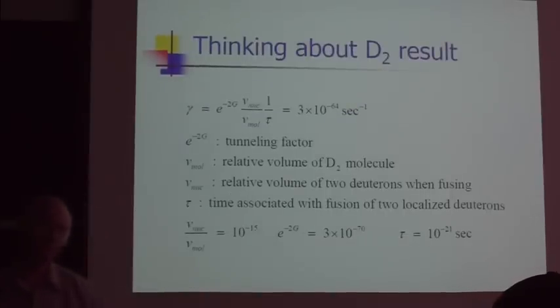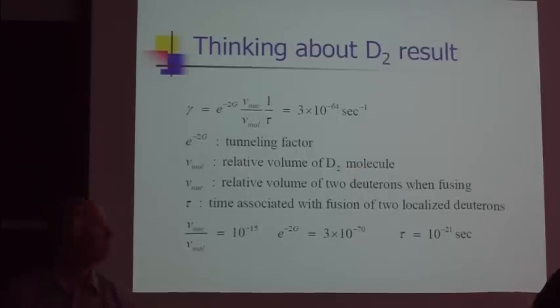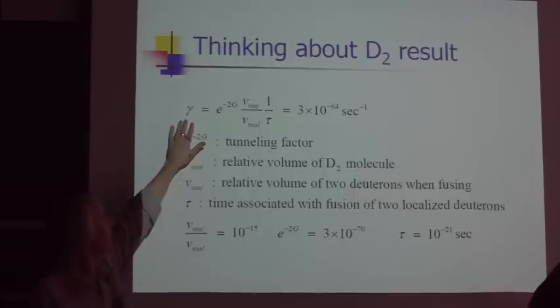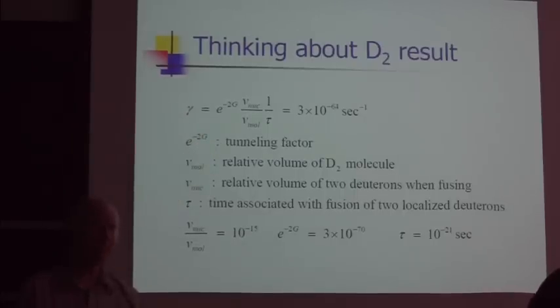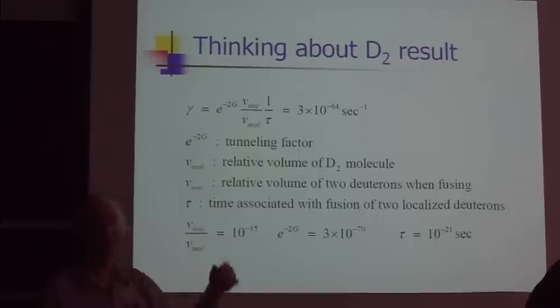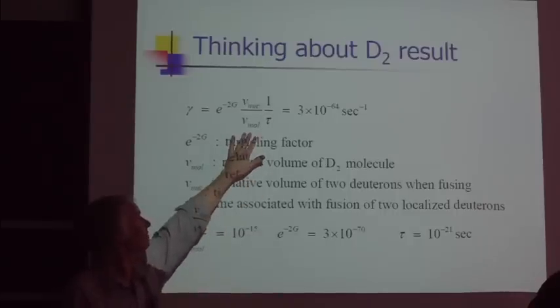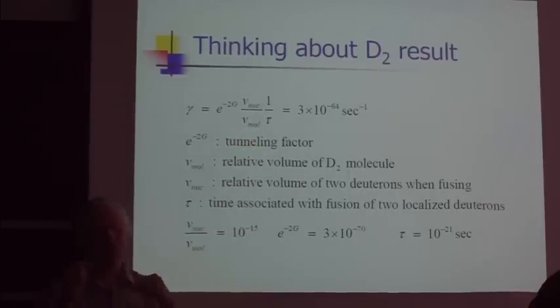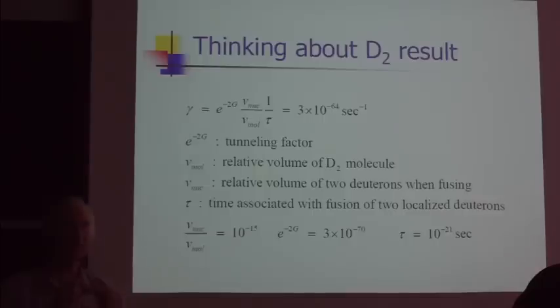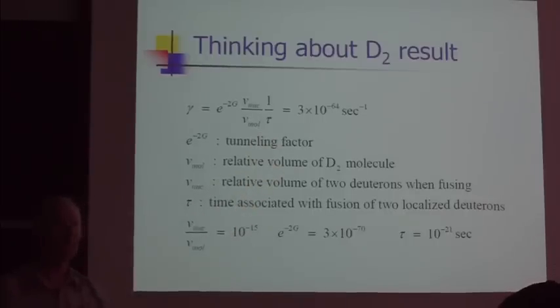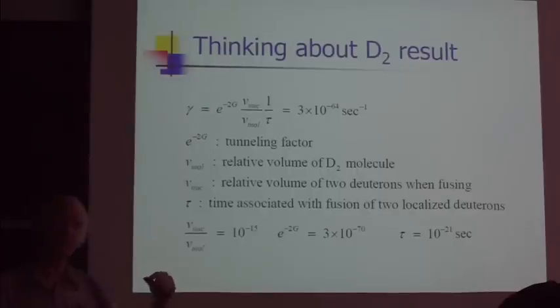So what I want to do is think about history as well, going through some arguments that were covered back in 1989. I can write this reaction rate very simply in terms of three variables. One is basically a tunneling factor. Another is a volume change from the molecule to when the deuterons are localized to the nuclear size scale. And then once you get the deuterons within range, you have a time constant for how fast they interact.